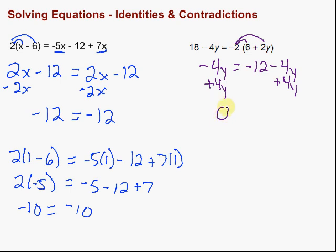And I'm left with 0 equals negative 12. I lost all my variables again. Is 0 equal to negative 12? Not in any universe that I'm aware of — this is not true. 0 is not equal to negative 12, so no number will work. There is no number y that we can put in that will make this equation work. There's no solution. It's also called a contradiction.